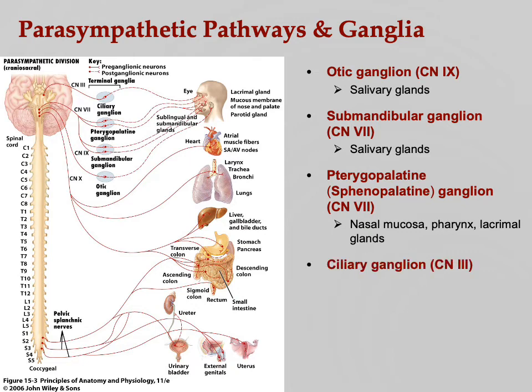The ciliary ganglion involves the ciliary muscles of the eye. Cranial nerve 3, the oculomotor nerve, goes to this ganglion controlling the smooth muscles of the eyeball, including the lens and pupil. Parasympathetic activation causes constriction of the pupil and controls accommodation of the lens — when objects are close, the lens adjusts to help focus, under control of these parasympathetic fibers synapsing in the ciliary ganglion.